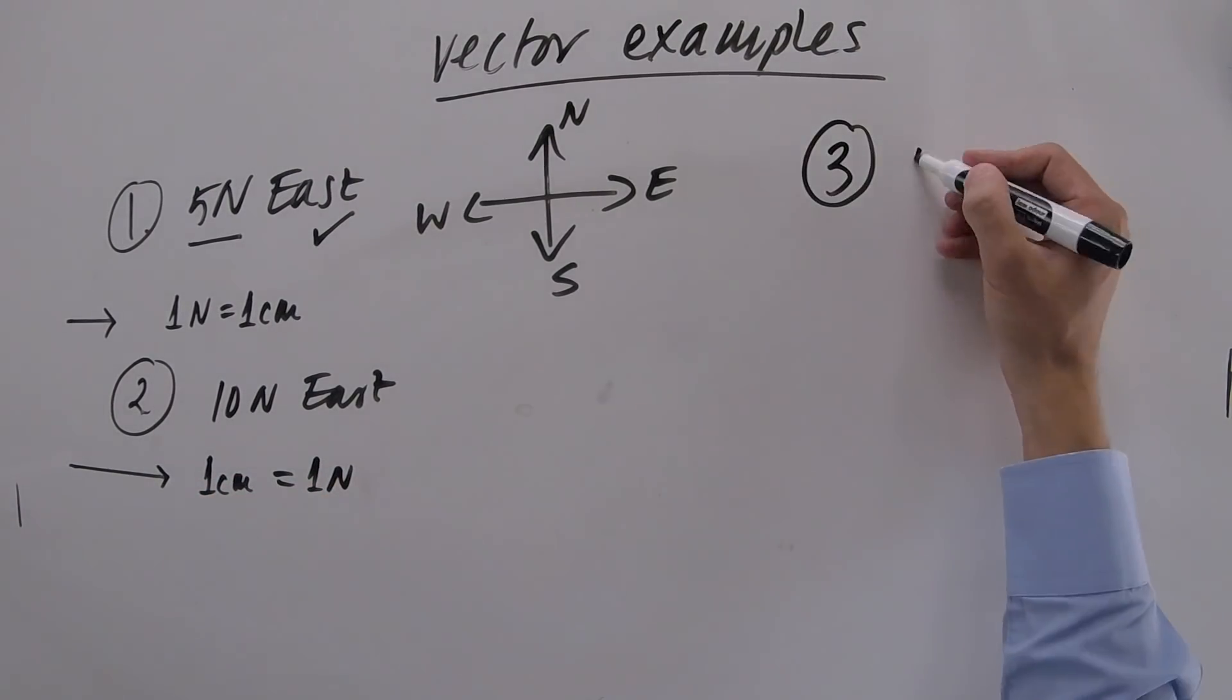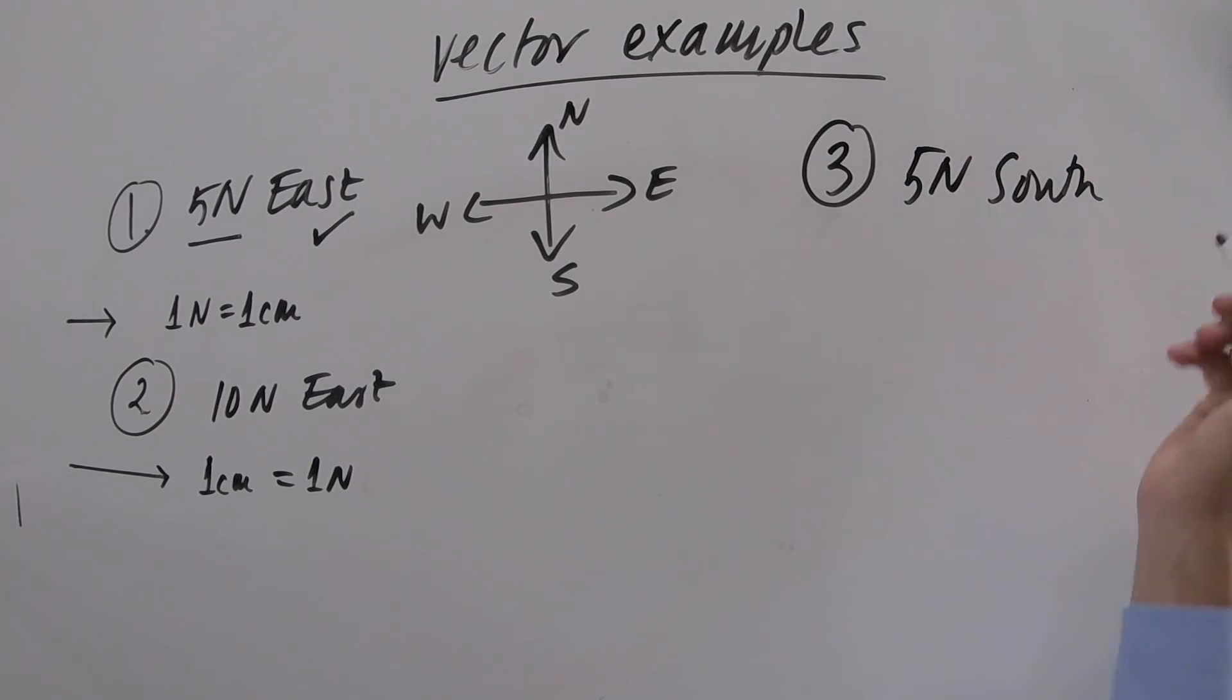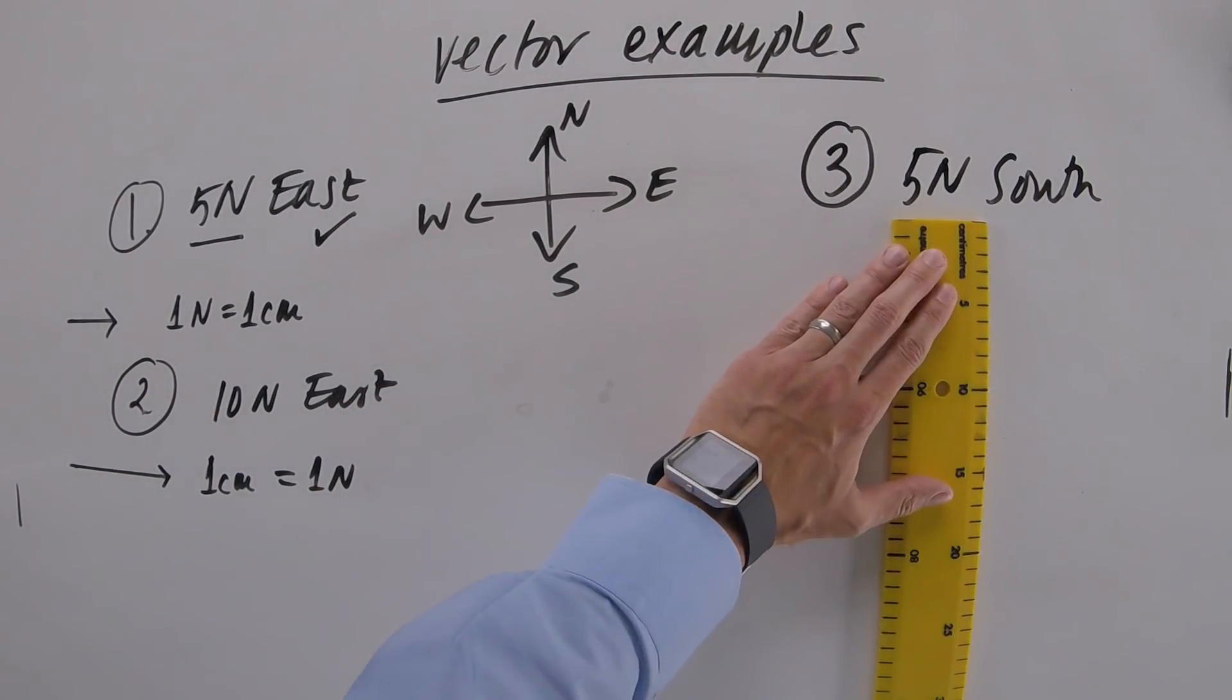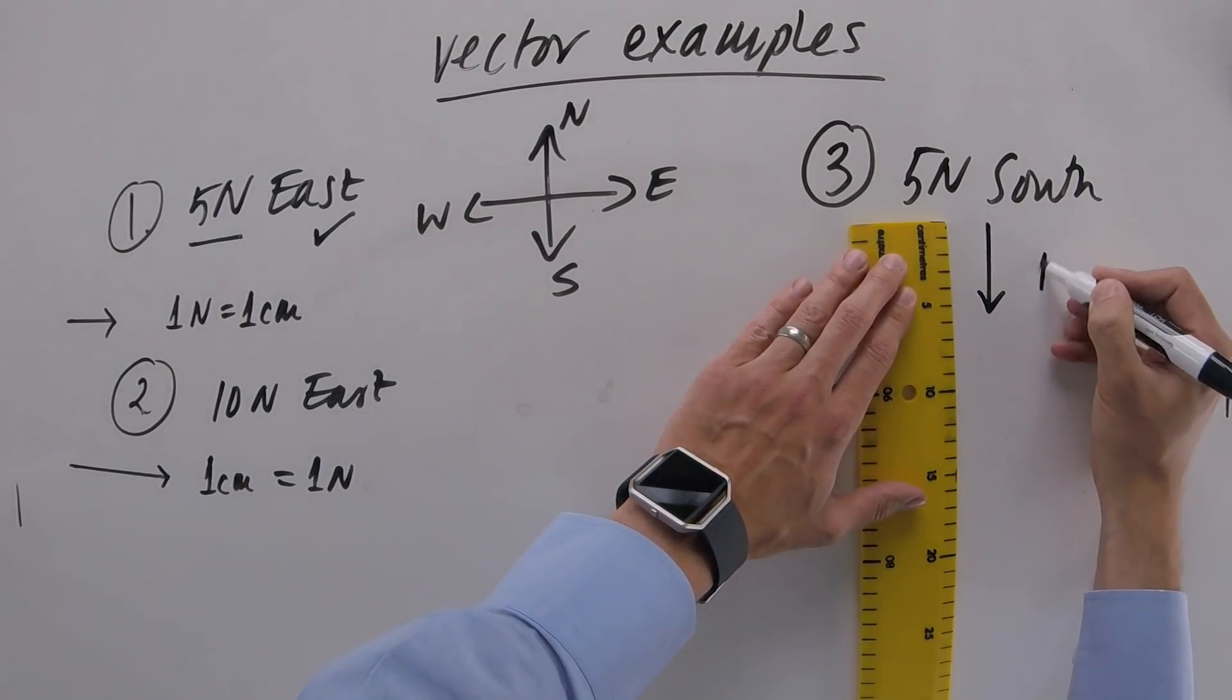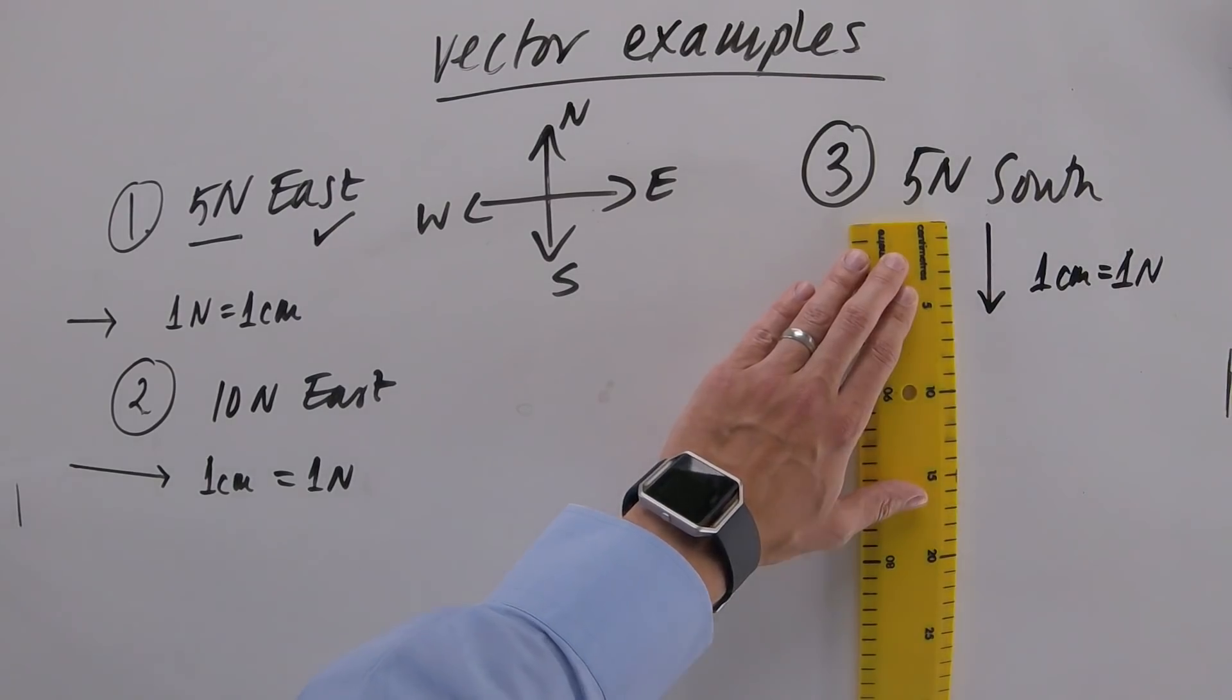Question three. What about if we had five newtons south? So south, we're going to be heading down the page. And it's the same length as that one. So we're just going to draw this on here. So five newtons south. And again, one centimetre equals one newton.